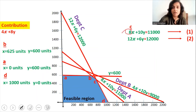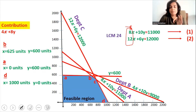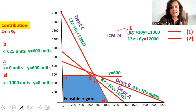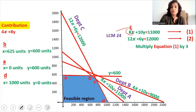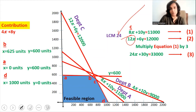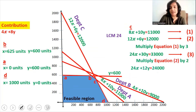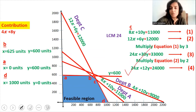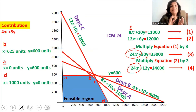We will make the coefficient of X the same in both equations. The LCM of 8 and 12 is 24, so we multiply equation one by 3 to get 24X plus 30Y equals 33,000 — that is equation three. We multiply equation two by 2 to get 24X plus 12Y equals 24,000 — that is equation four. Subtracting equation four from equation three, X gets eliminated since the coefficients are the same, leaving only Y.